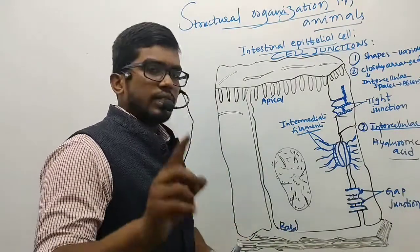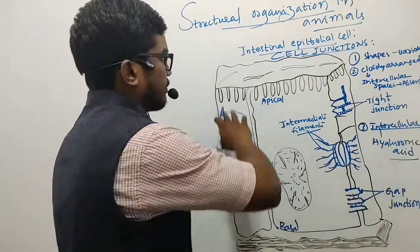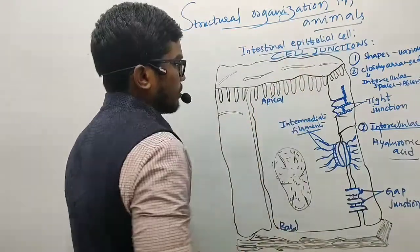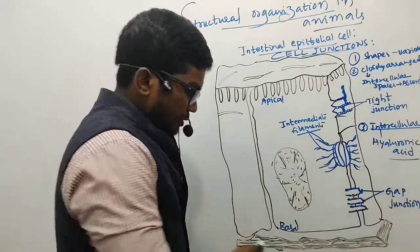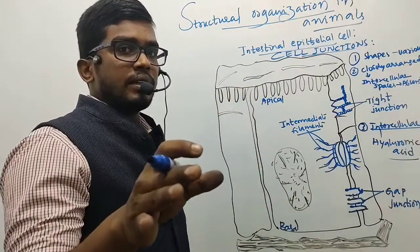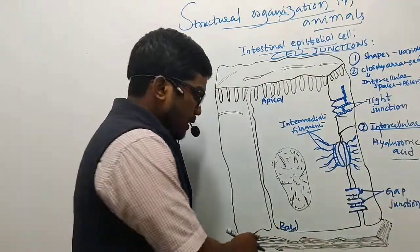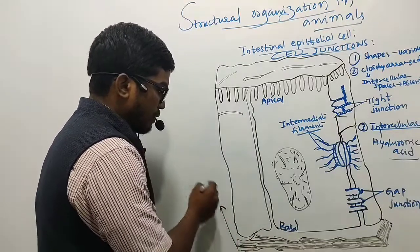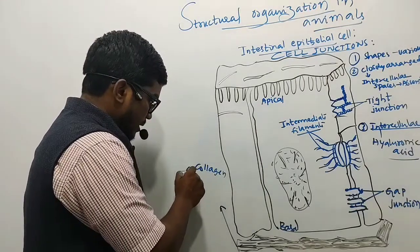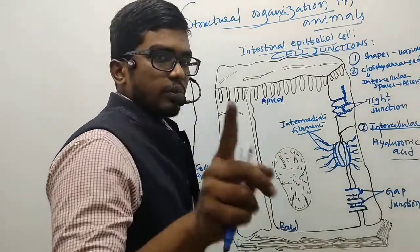Always remember that epithelial tissues rest on a basement membrane. For example, the intestinal epithelial cell shown here is lining on the basement membrane — a cell will always rest on a basement membrane. These basement membranes are generally made up of either collagen or glycoproteins.